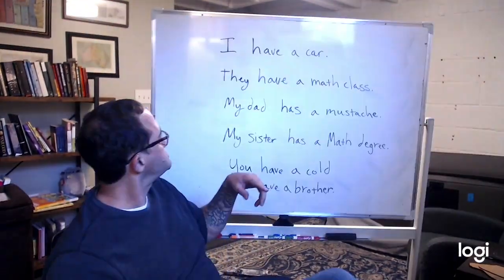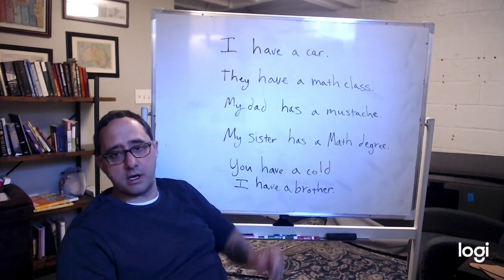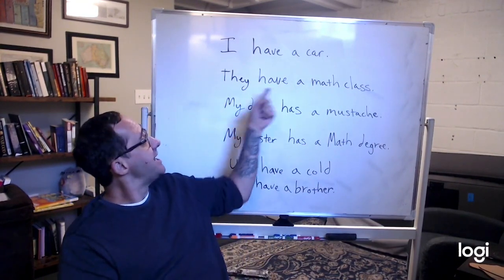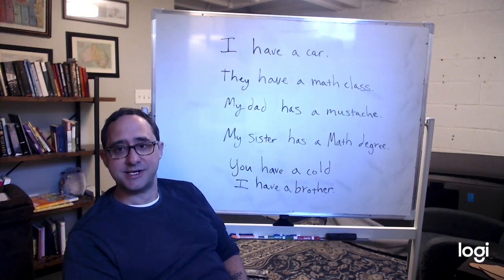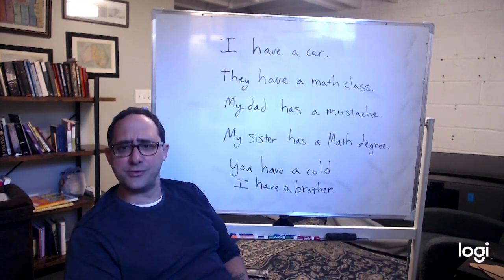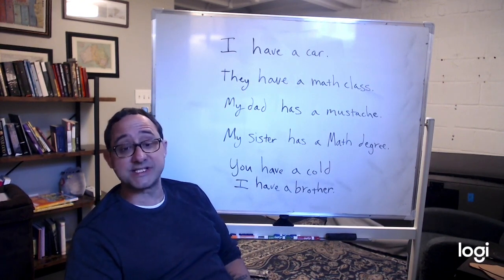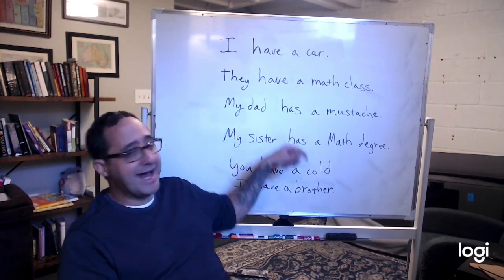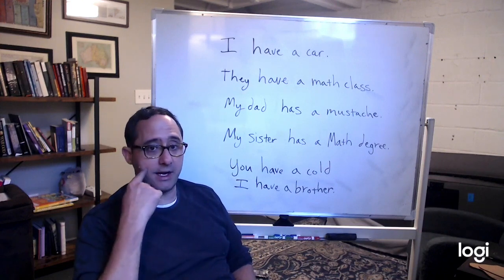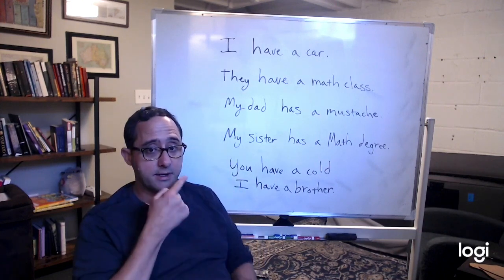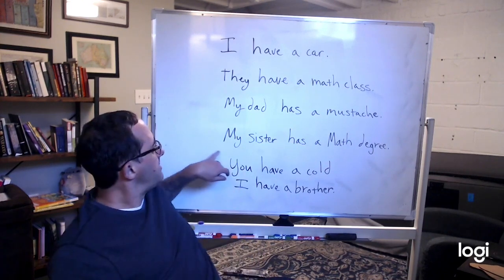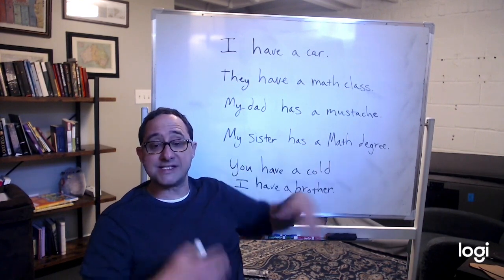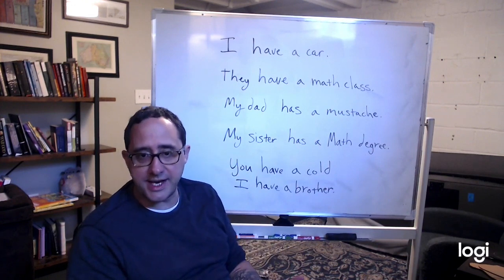How do we use this? I have a car — I own a car. They have a math class. They don't own the math class, but in English we say they have a math class. My dad has a mustache — hair across your lip, not a full beard, just a mustache. My sister has a math degree, a bachelor's degree in mathematics.